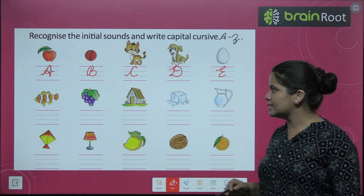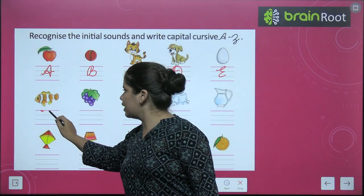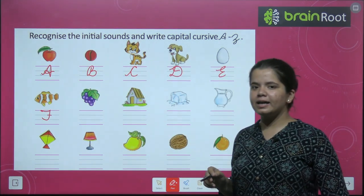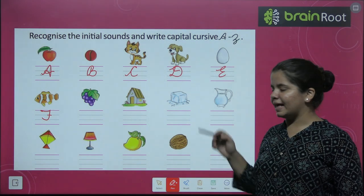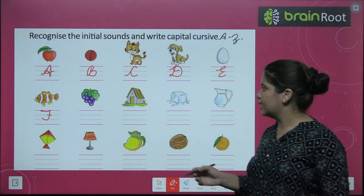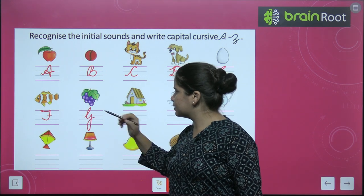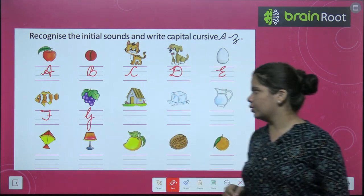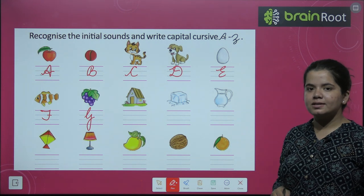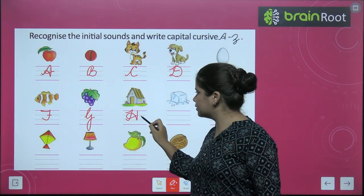Next is F. F for fish. There is a fish picture here too. Next is grapes. G for grapes. Next is hut. H for hut.